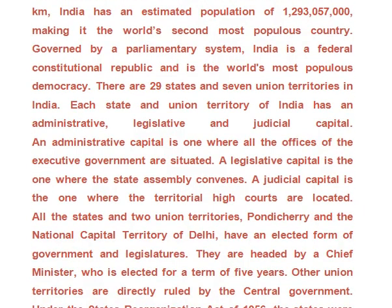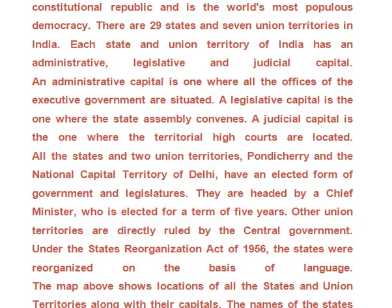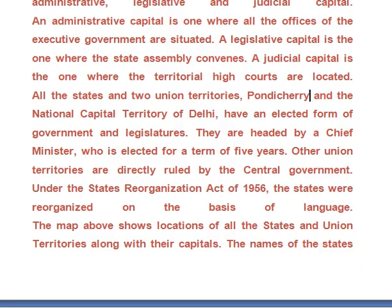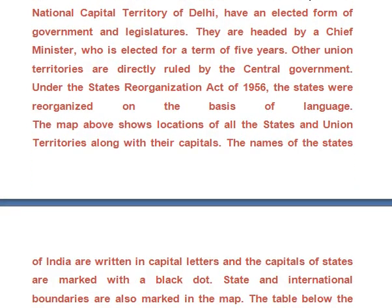All the states and the two union territories, Pondicherry and the National Capital Territory of India, have an elected form of government and legislatures. They are headed by a chief minister who is elected for a term of five years. Other union territories are directly ruled by the central government. Under the State Recognition Act of 1956, the states are reorganized on the basis of language.